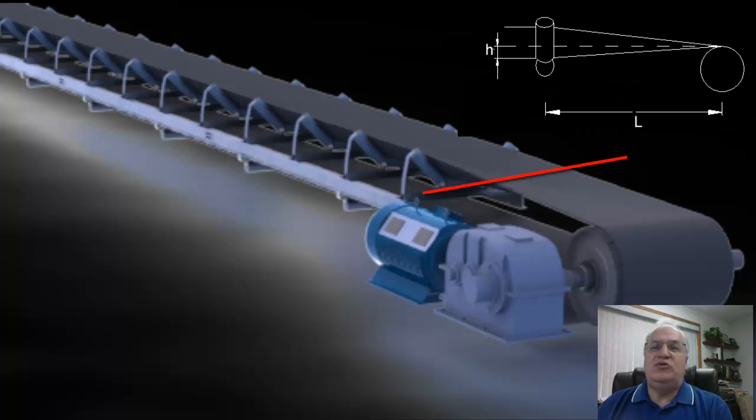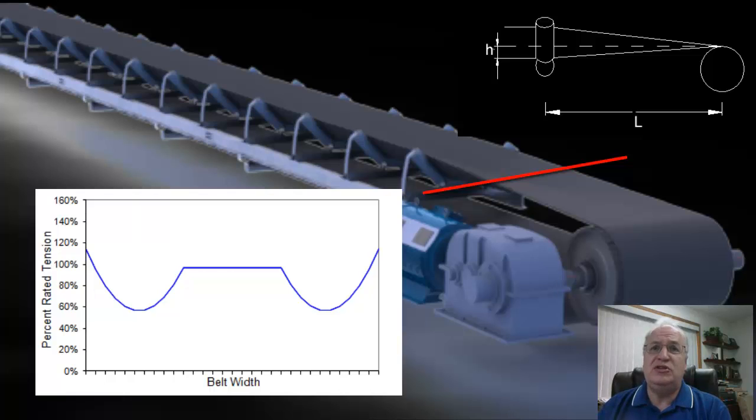But when the belt goes through such things as a transition length, parts of the belt are being stretched more than other parts of the belt, therefore we don't get an equal distribution of tension anymore. Our tension diagram across the width of the belt might look something like this, where the edges are being stretched a little bit more, therefore have a little bit more tension in it than the average in that section.